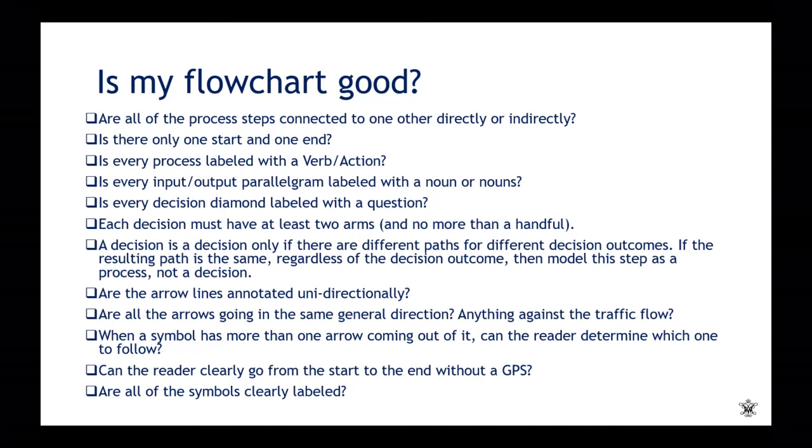Are the arrow lines annotated unidirectionally, meaning do they all go in the same direction? Are all the arrows going in the same general direction? Anything against the traffic flow in a non-logical way? When a symbol has more than one arrow coming out of it, can the reader determine which one to follow? Can the reader clearly go from the start to the end without a GPS? And again, are all the symbols clearly labeled? Is there anything missing a label?